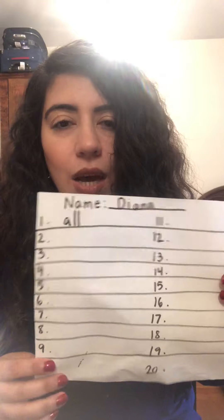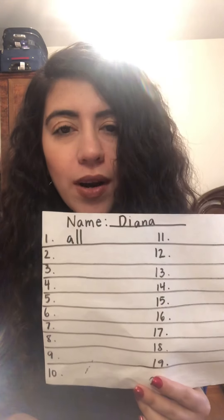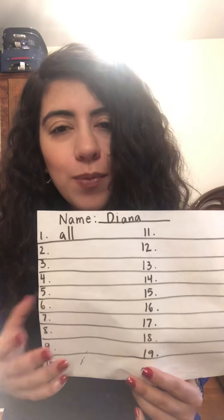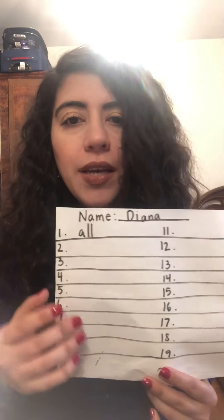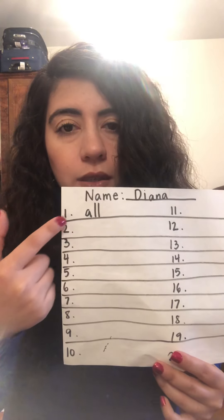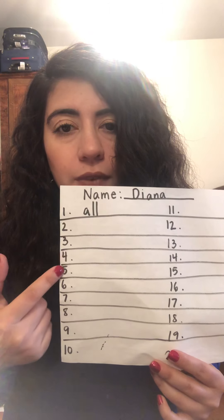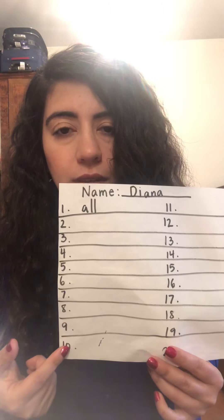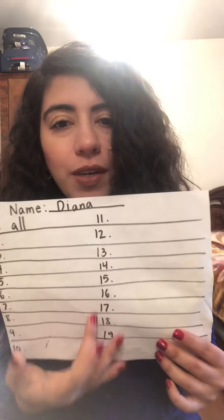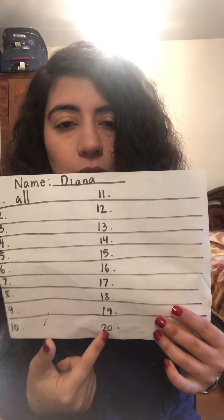Then what we're going to do is number our paper from one to 20 because I'm going to give you guys 20 sight words today, like we normally do in class. Number it from one to 10 for the first column — going from top to bottom. Then the second column is going to be from 11 all the way to 20.